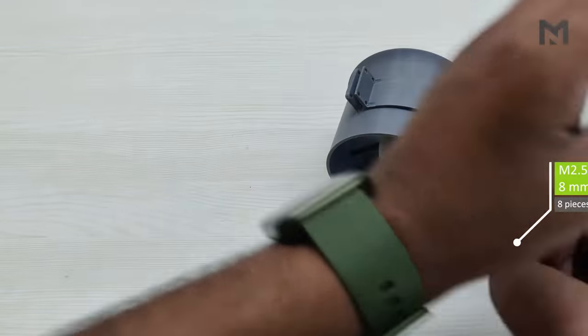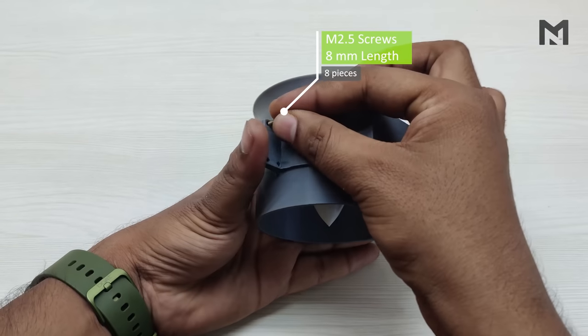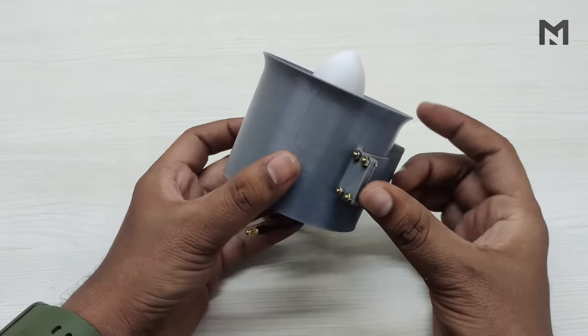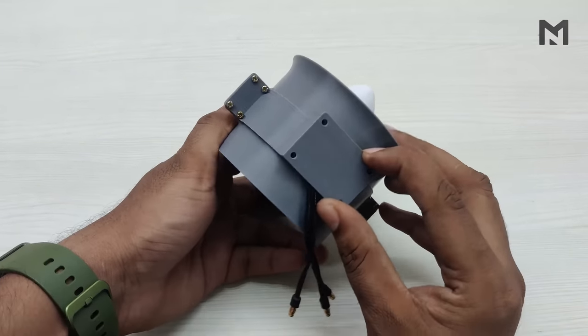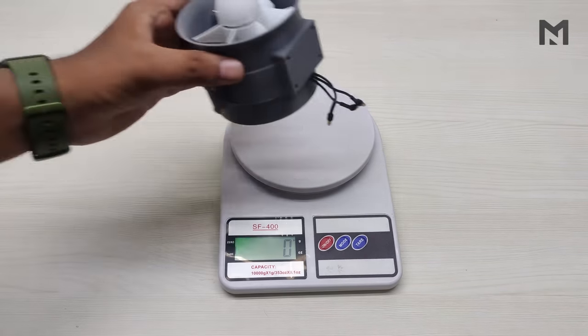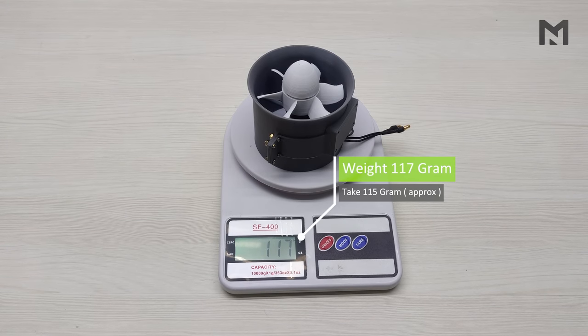I am using eight screws of M2.5 diameter and 8mm length to mount the EDF with the attachment. After connecting it, the EDF will have a flat bottom and it can be mounted on the test rig. First I will calculate its weight, and its weight is around 115 grams.